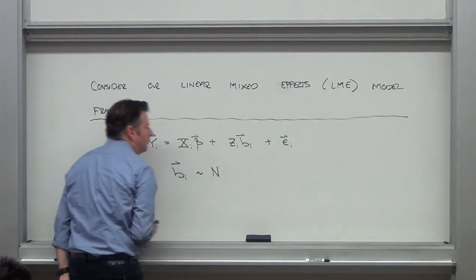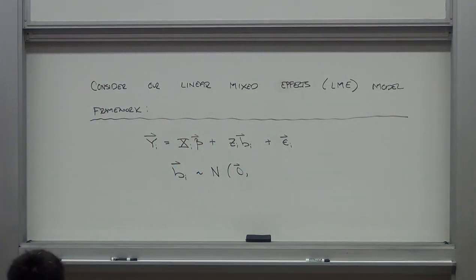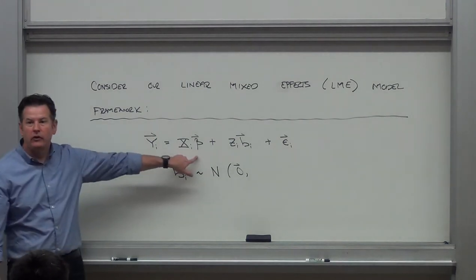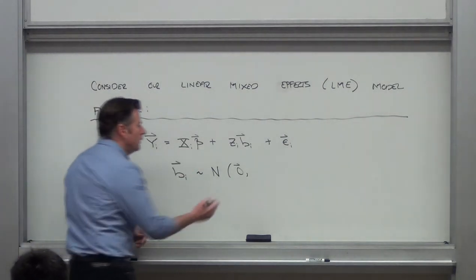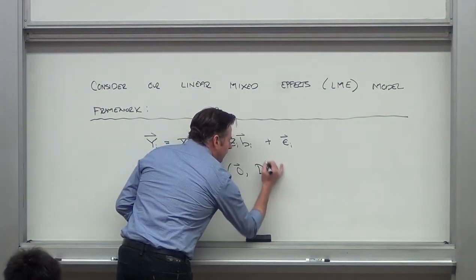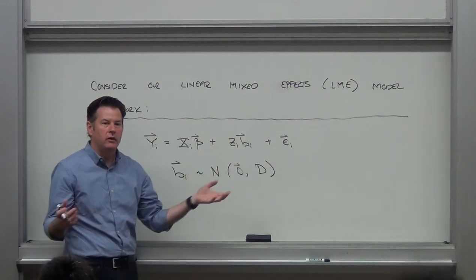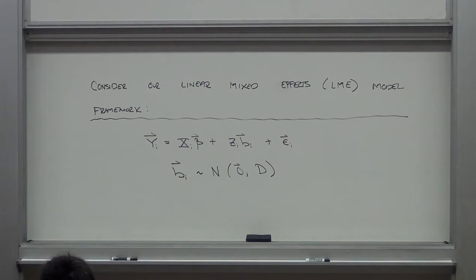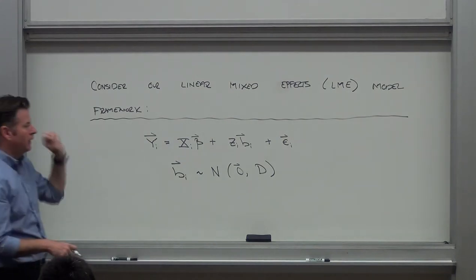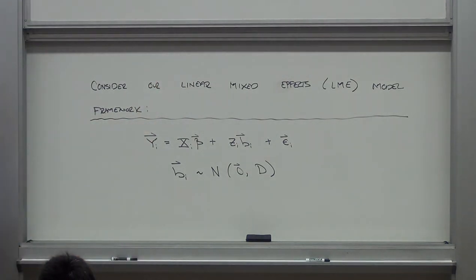The structure we typically put on the model is that the random effects come from a population that's normally distributed with mean zero — each person comes from the grand mean of the population. It has some variance-covariance matrix D, which characterizes how different individuals are in the population. Large variance in D means people tend to be high or low and vary a lot across the population.